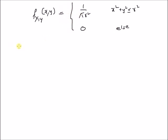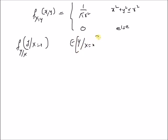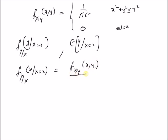Given this joint PDF, our goal is to find f_{Y|X}(y | X = x), the conditional PDF of Y, and also the conditional expectation E[Y | X = x]. The conditional PDF is defined as the ratio of the joint PDF f_{X,Y}(x,y) divided by the marginal PDF of X.